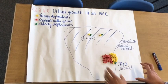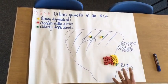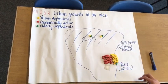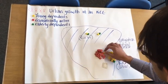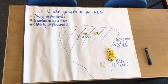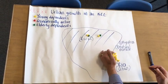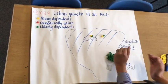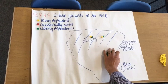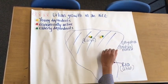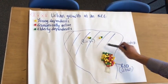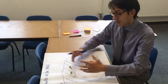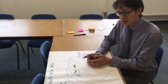Over time, because opportunities have increased in the city and healthcare has improved, people live a lot longer. So the economically active people will eventually turn into elderly dependents, and the young dependents will eventually turn into economically active, who will continue to have more children. So our population has further increased due to this natural increase. Urban growth in Rio is therefore due to both migration — internally and internationally — and natural increase.